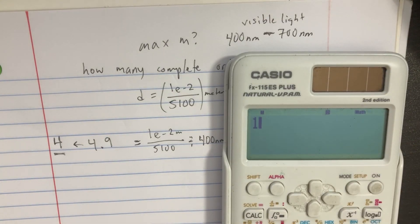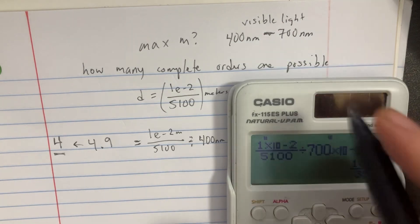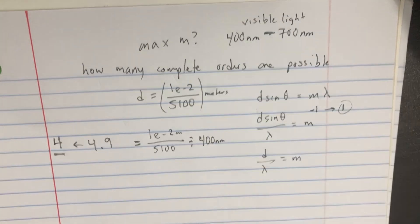Now let's try the same thing for the seven hundred. So one E to the negative two divided by five one zero zero. And we're just divided by seven hundred this time. That's the other side of the range that we have here. And we get two point eight.